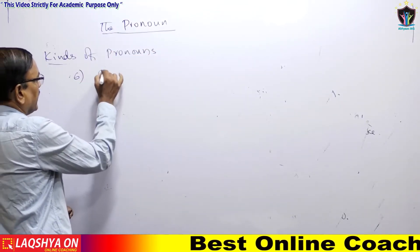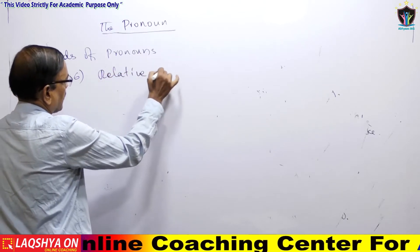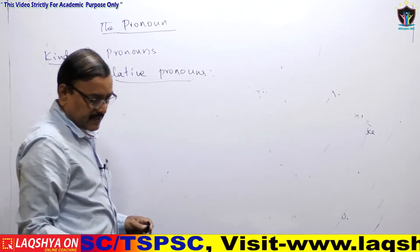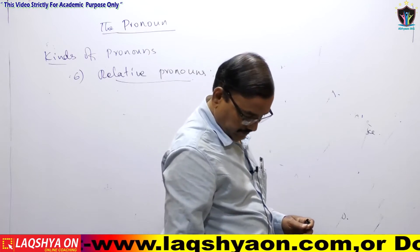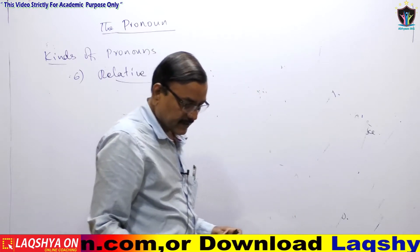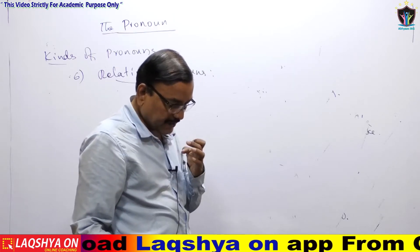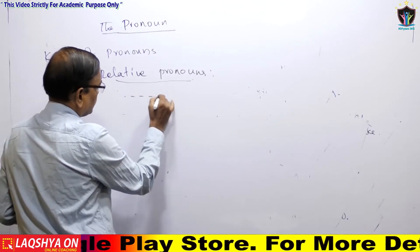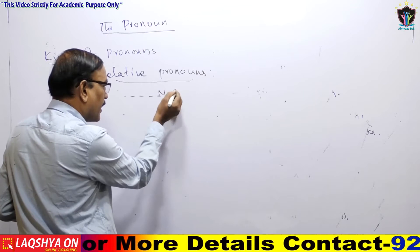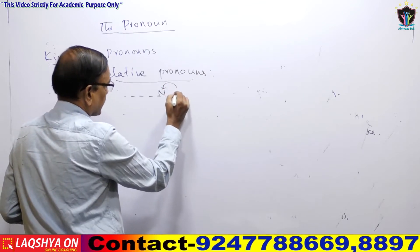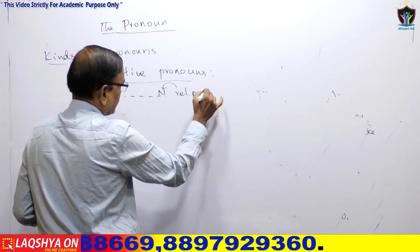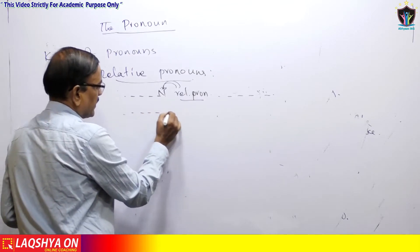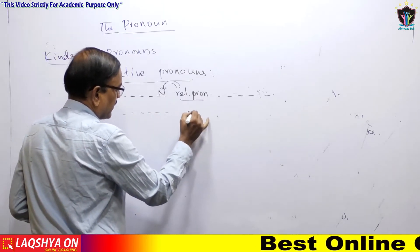Now we come to the 6th topic: Relative Pronouns. Relative pronouns refer or relate to some noun going before them. For example, here is a relative pronoun — it relates to the noun that precedes it. It ends with a noun on one side and the relative pronoun connects back to it.